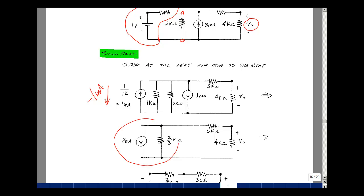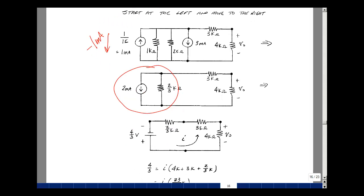Now I could do a source transformation again with these two. I have a parallel current source, parallel resistance. We take the product of these two, so 2 milliamps times two-thirds k. The milli and the k cancel, and I get 4 over 3 volts.